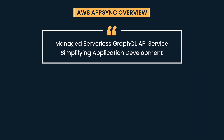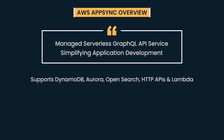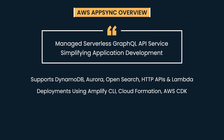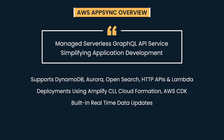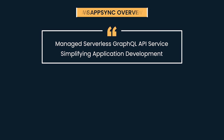AWS AppSync is a managed serverless GraphQL service that simplifies application development by letting us create a flexible GraphQL-based API. AppSync supports a range of data sources like DynamoDB, Aurora, OpenSearch, HTTP APIs, and Lambda. We can deploy AppSync using different tools like Amplify CLI, CloudFormation, CDK, etc. AppSync also supports built-in real-time data update capabilities, pushing real-time updates over WebSockets to millions of clients, and supports offline capabilities with local data stores that sync when devices come back online.